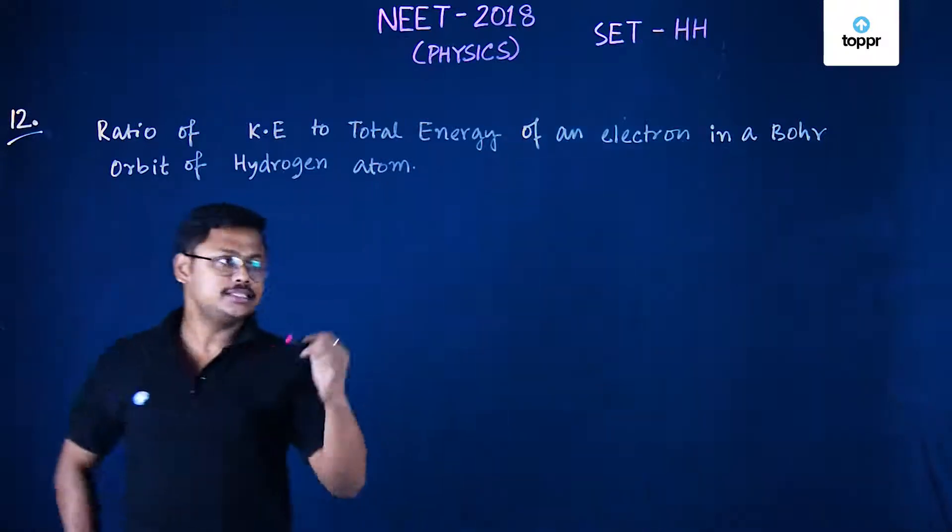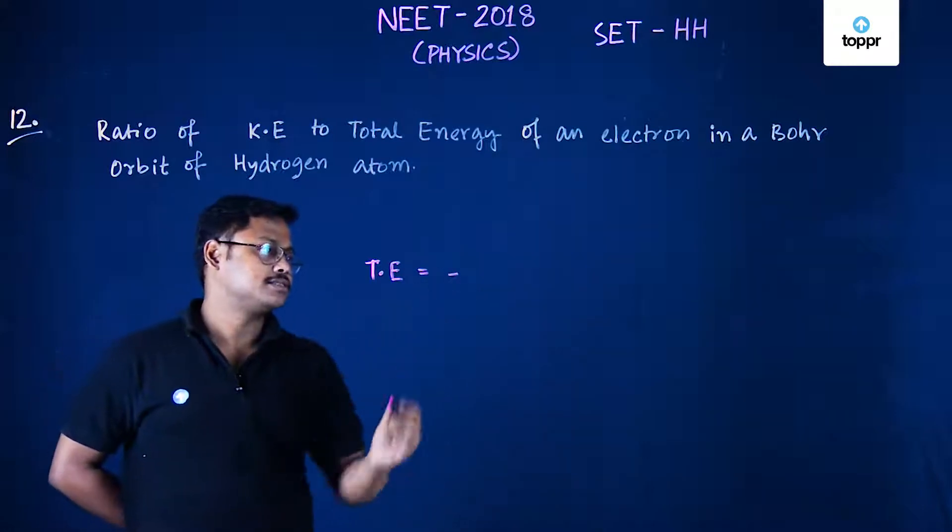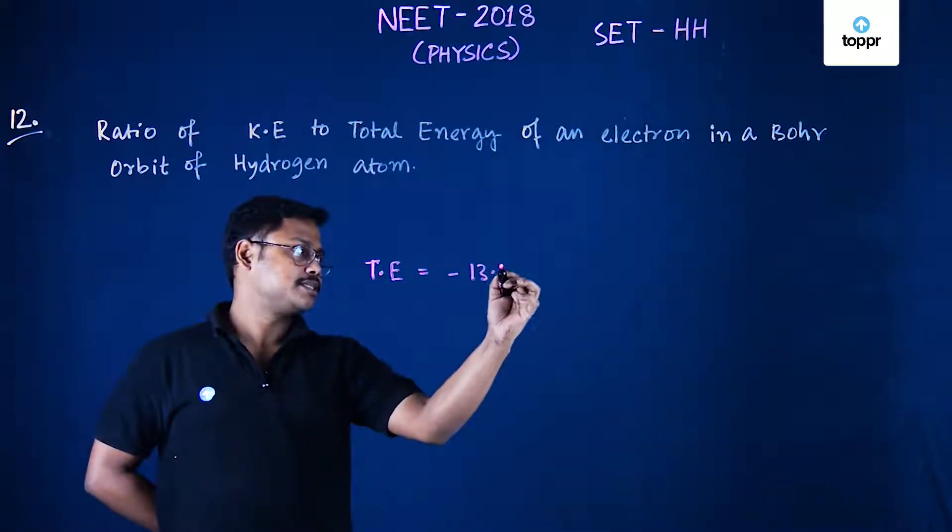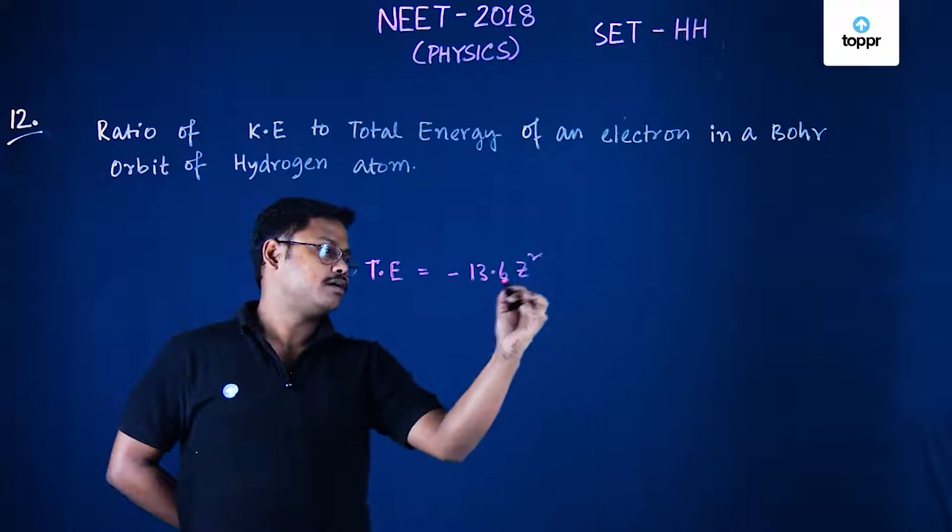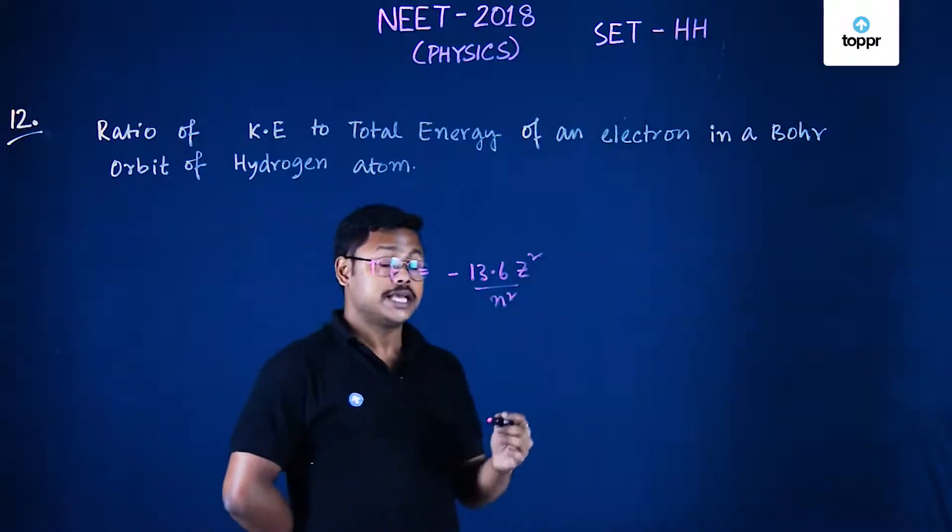So total energy expression can be written as minus 13.6 z square upon n square. And for hydrogen the value of z will be 1.